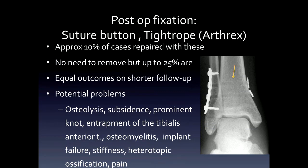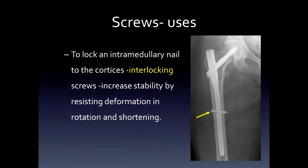Another proposal is to use the so-called tightrope or suture button technique, which allows cables to be passed between the tibia and the fibula and anchored on either side. This construct does not need to be removed, although it often is. The interlocking screw locks an intramedullary nail to the cortices to increase its stability.